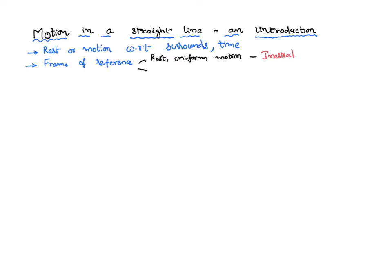It could be not in the state of rest, not having a uniform motion, but having some acceleration. That kind of a frame which is having acceleration is called a non-inertial frame. Let us initially start dealing with a body in an inertial frame — that means the frame is either in the state of rest or moving with a uniform velocity.